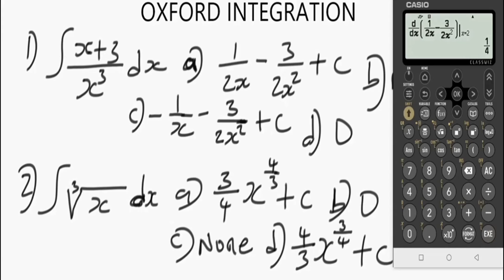The result is not 0.625, so option A is not correct. Let's check option B — that is 'none'. Now let's adjust and try option C: make the necessary changes, adding a negative sign in the appropriate place. Press execute — exactly, that gives us 5/8. So the correct option for this question is option C. It's as simple as this!